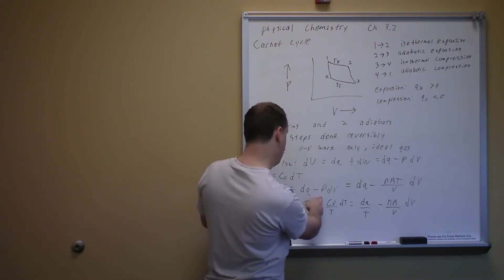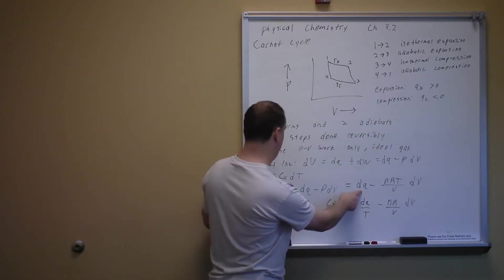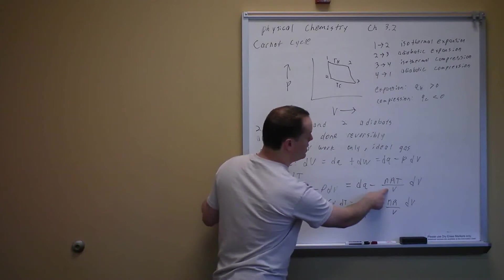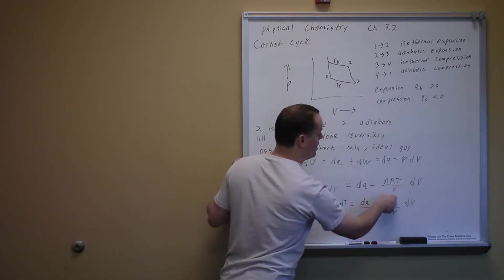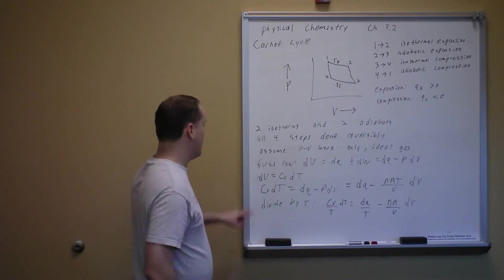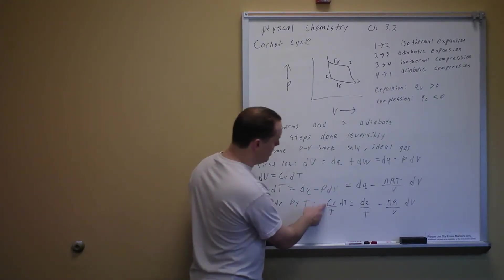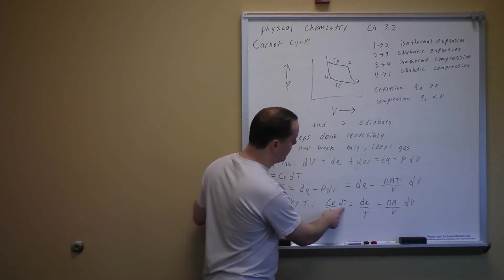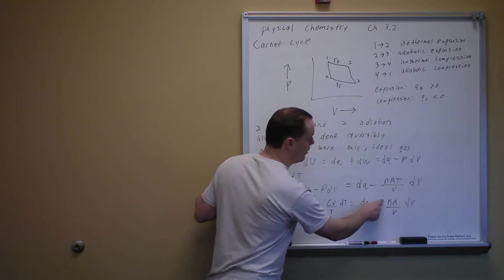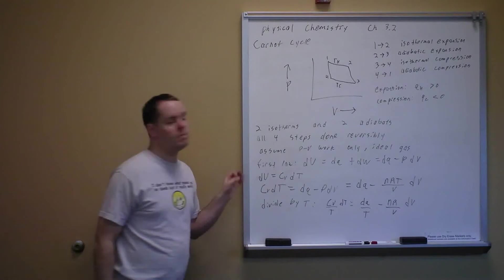Using the ideal gas law substitution, we can do calculus. Dividing by temperature gives (CV/T) dT equals dQ/T minus (nR/V) dV, since the T's cancel in the last term.